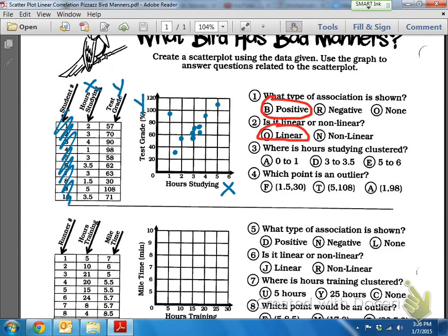All right. Where is hours studying clustered? So clustered is a way of thinking like a group, or there's a whole bunch of them together. So it wouldn't just be like one of them out here or like one down here. The one they're looking for is this one right here. Notice how there's like five all kind of grouped together or close together. That's what a cluster is. So where are they clustered? It looks like it's between three and four, or three to 3.5.